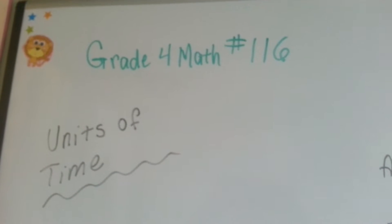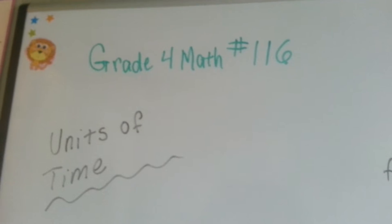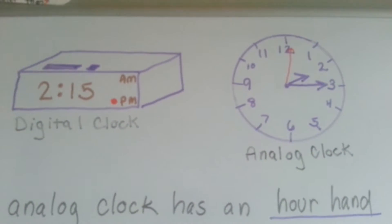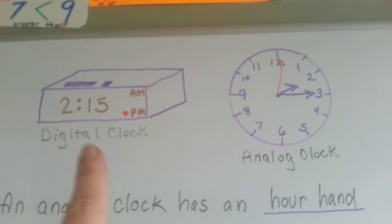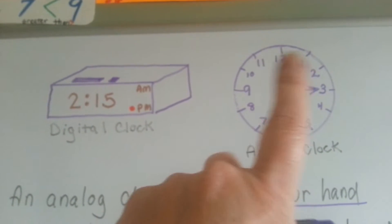Grade 4 math number 116 units of time. There's two types of clocks. There's a digital clock that shows numbers, like this, and there's an analog clock that has hands.